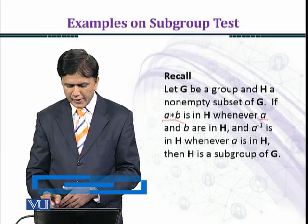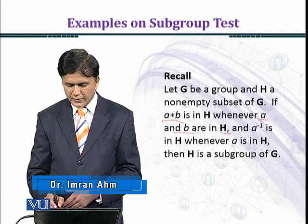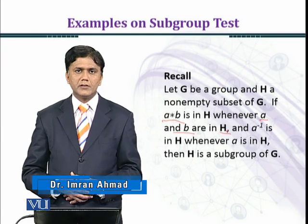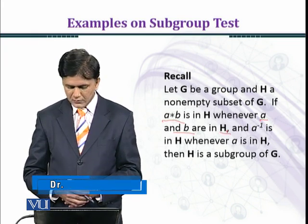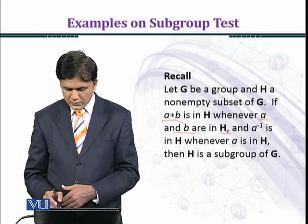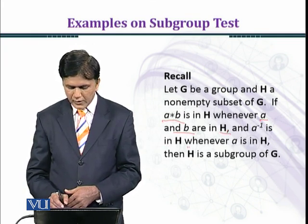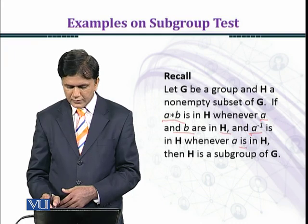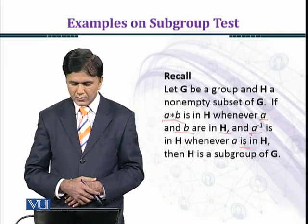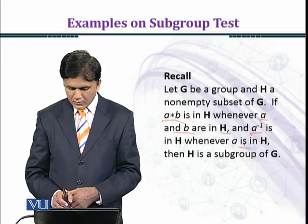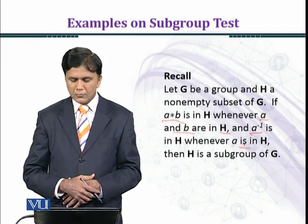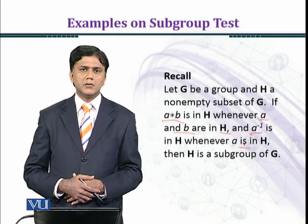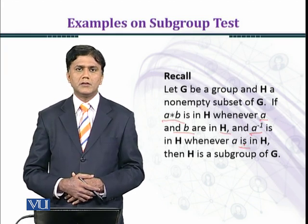a and b are in H, that is, the closure property is satisfied in H, and a^(-1) is in H whenever a is in H, that is, existence of inverses, then H is a subgroup of G. This result we have proved in the last module.